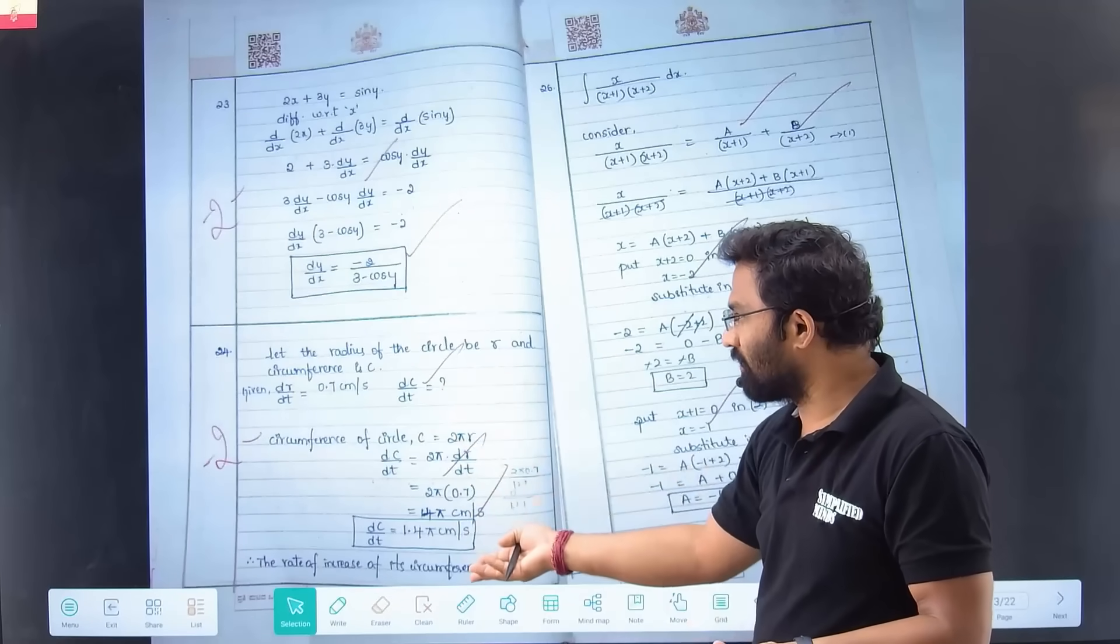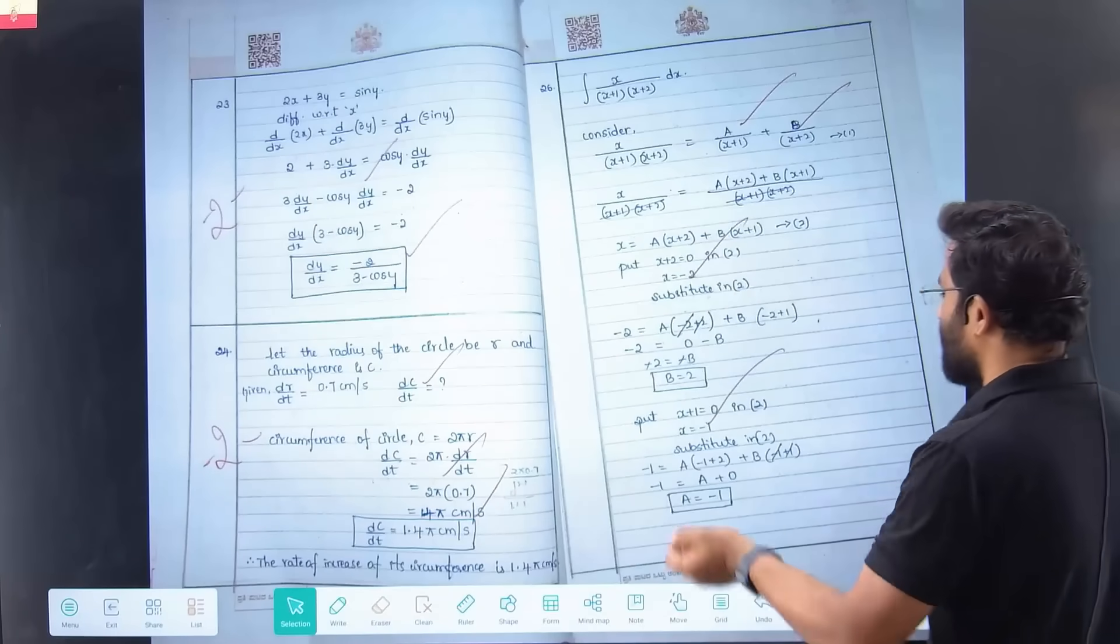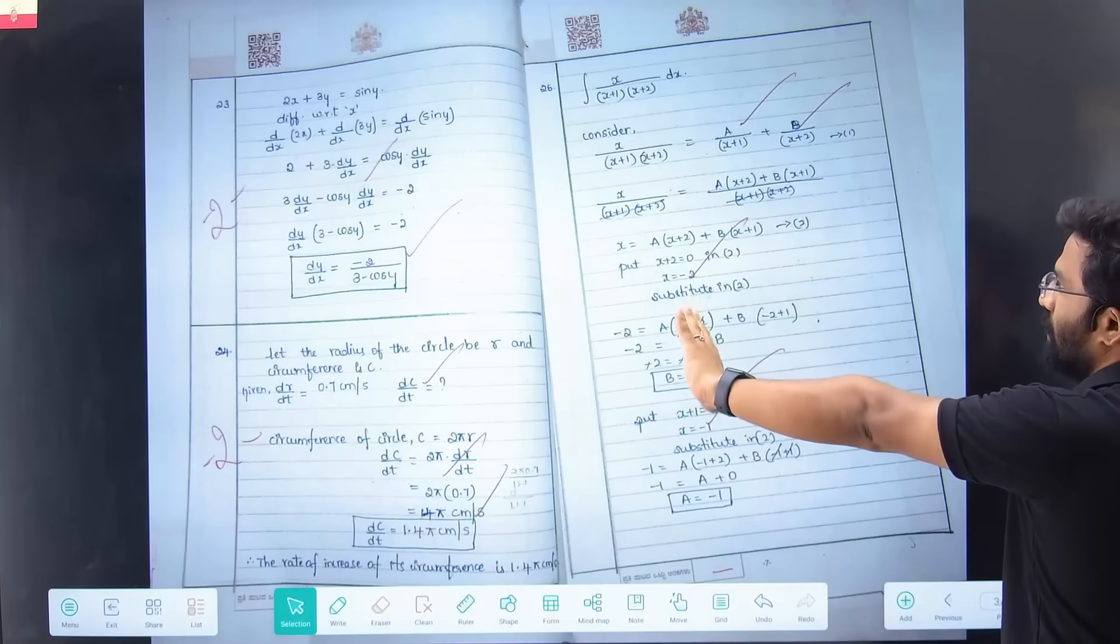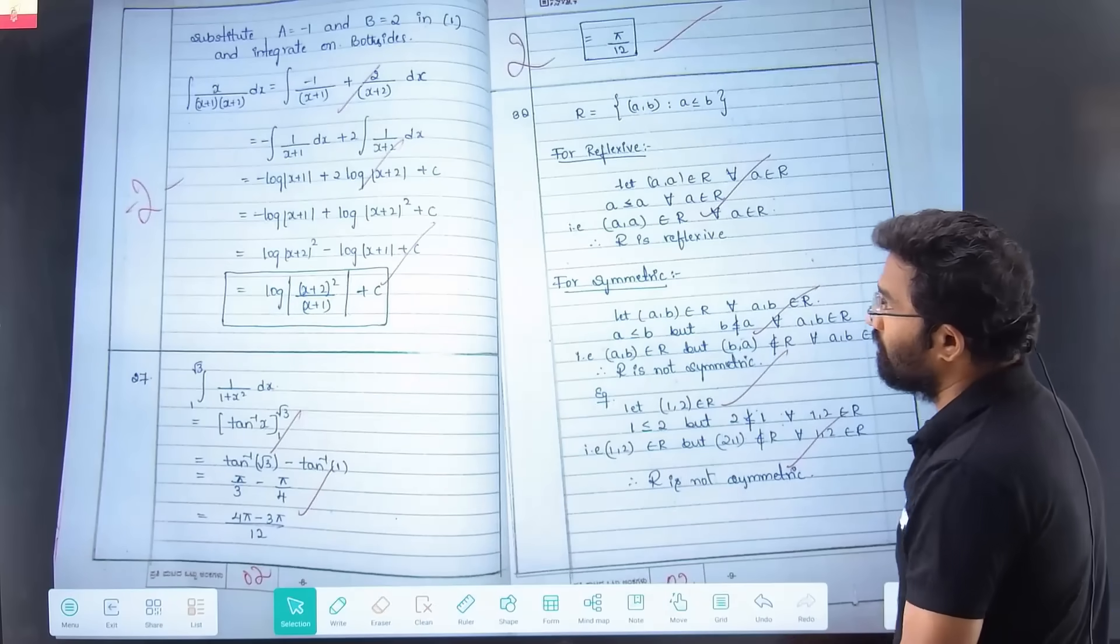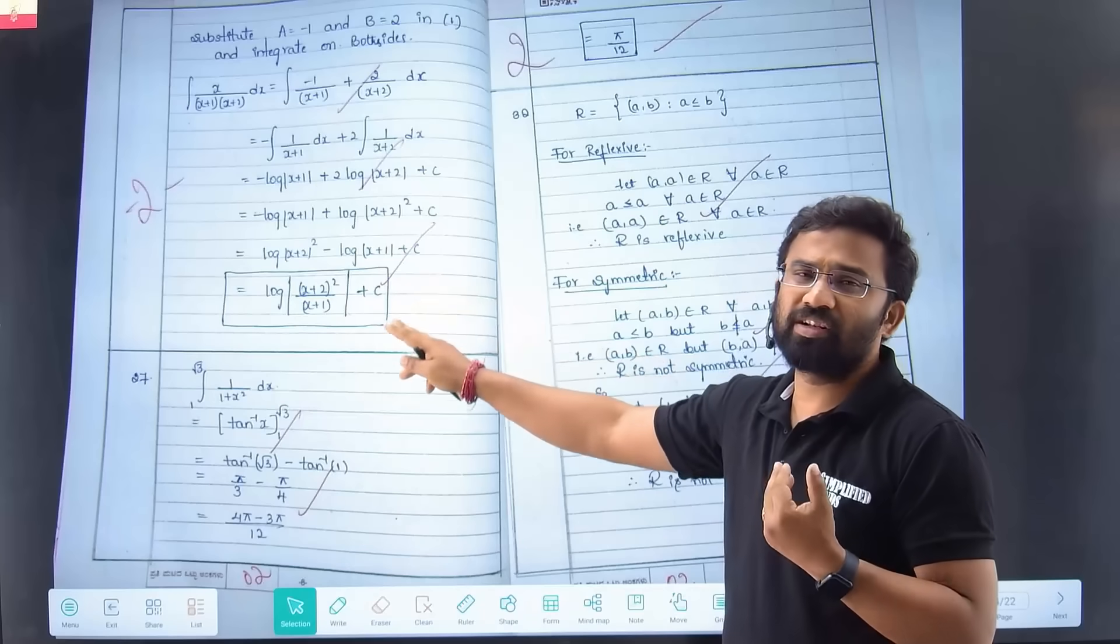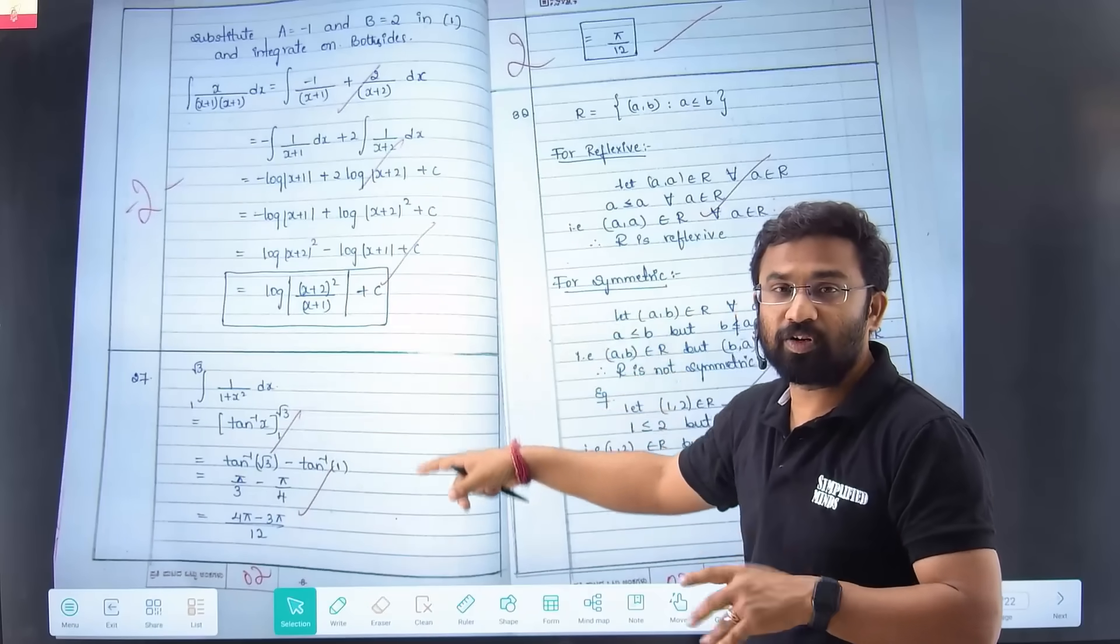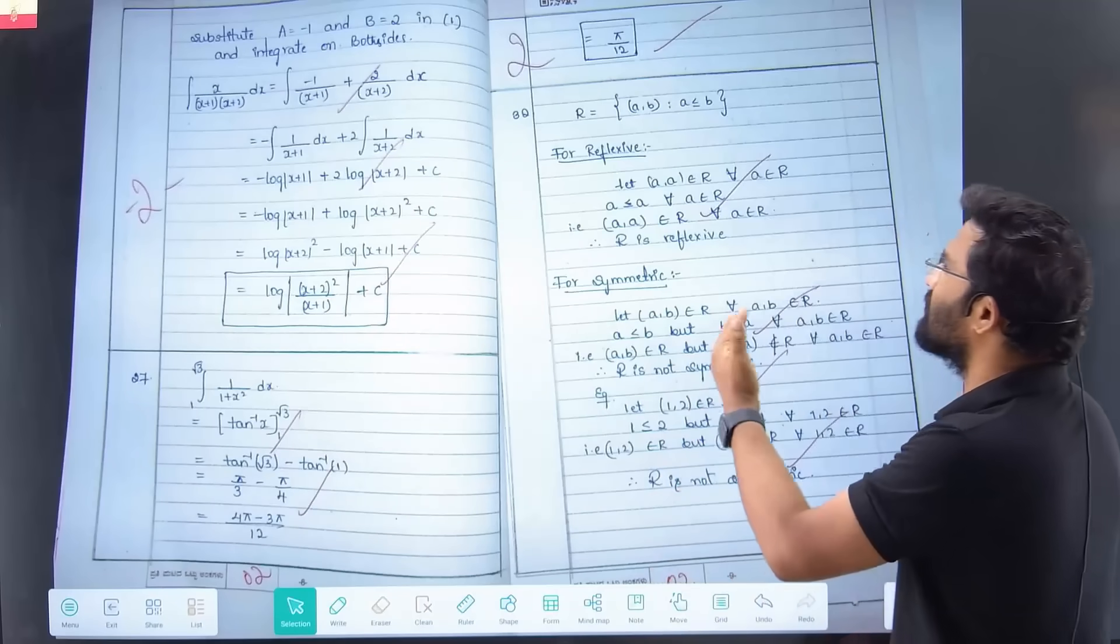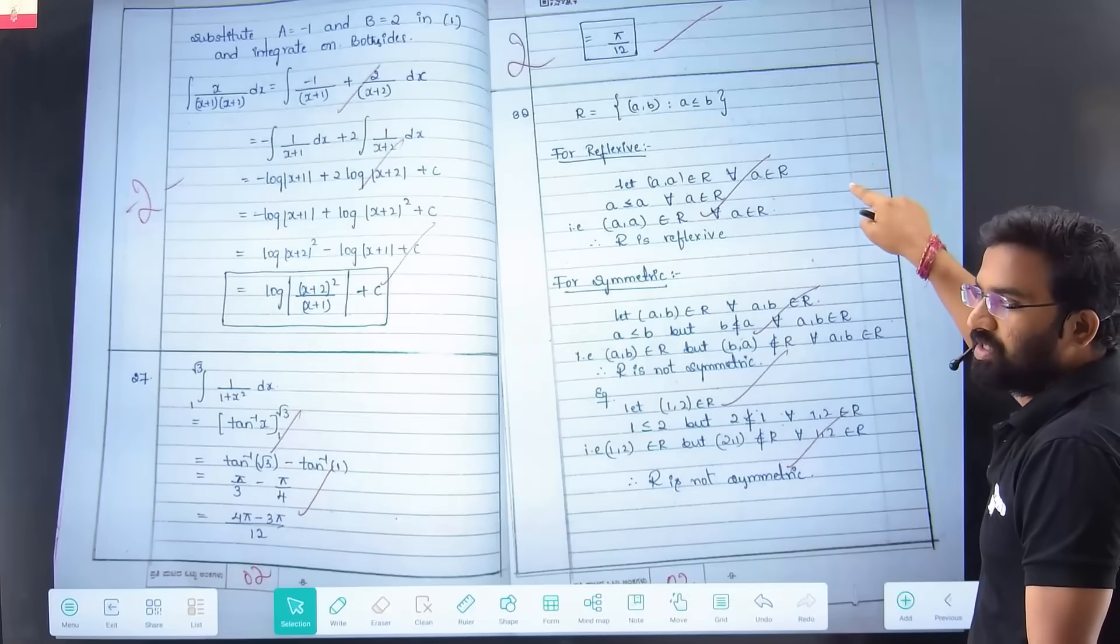For application of derivatives, given that dr/dt is given, you have to find dc/dt - how fast circumference is changing. Write the circumference formula, then substitute and get the answer. Don't forget the units. Integration questions are also shown. Steps are very less but you will get the marks, but when it goes to determinants and all, steps are more.